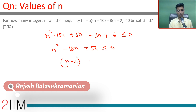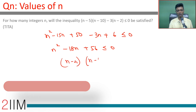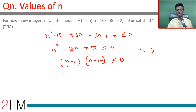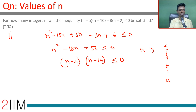Factorizing gives (n-4)(n-14) ≤ 0, so n should lie between the roots. Since it is less than or equal to 0, n can take values from 4 to 14: that's 4, 5, 6, 7, 8, all the way till 14 — this is 11 values. Very simple question: simplify, then factorize.